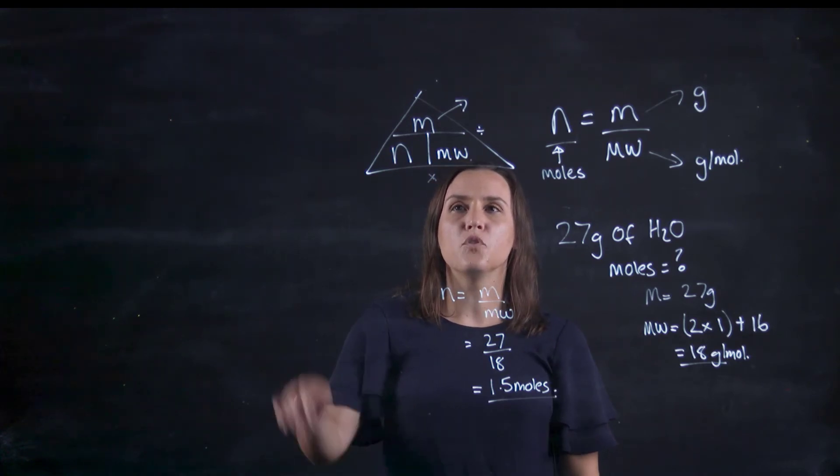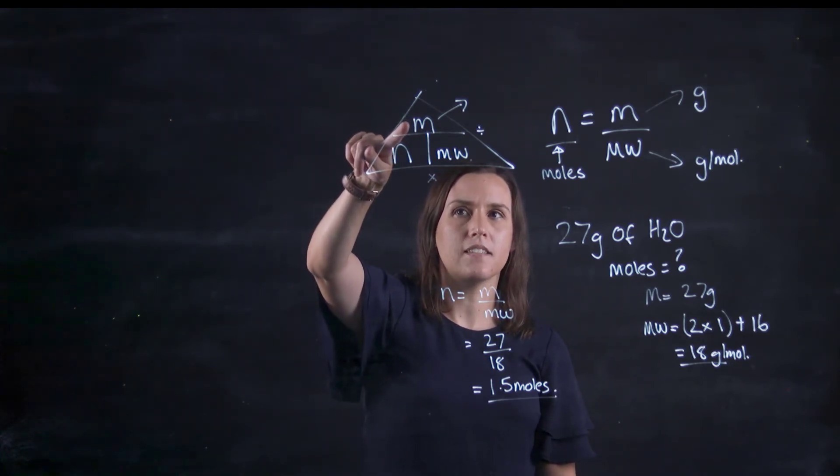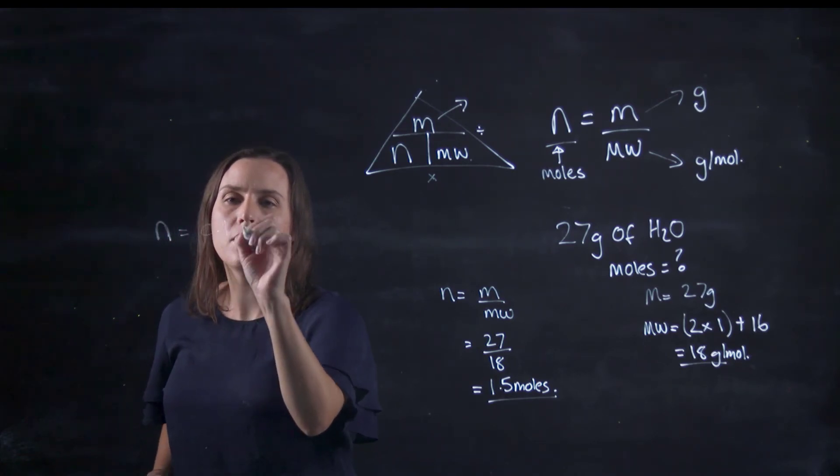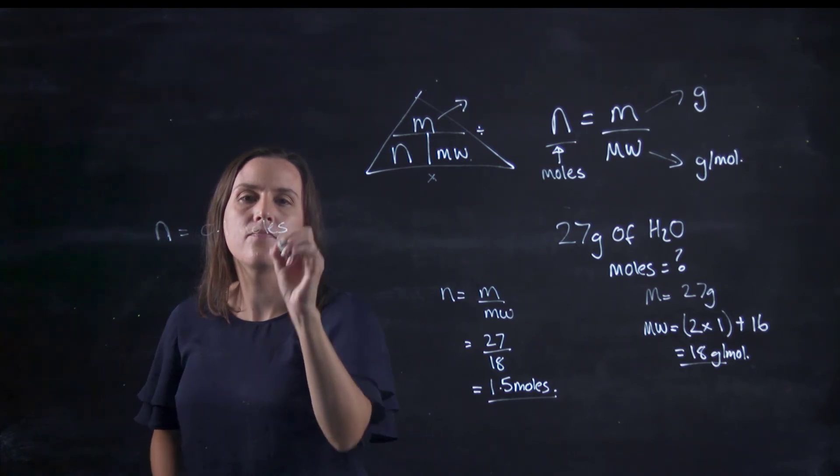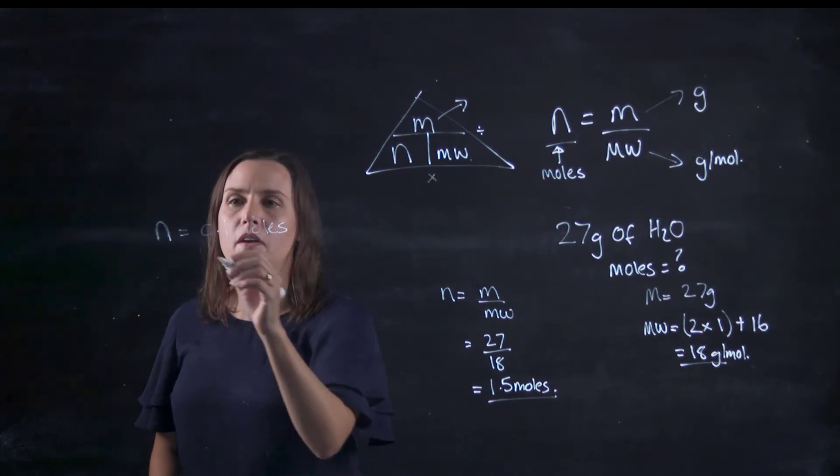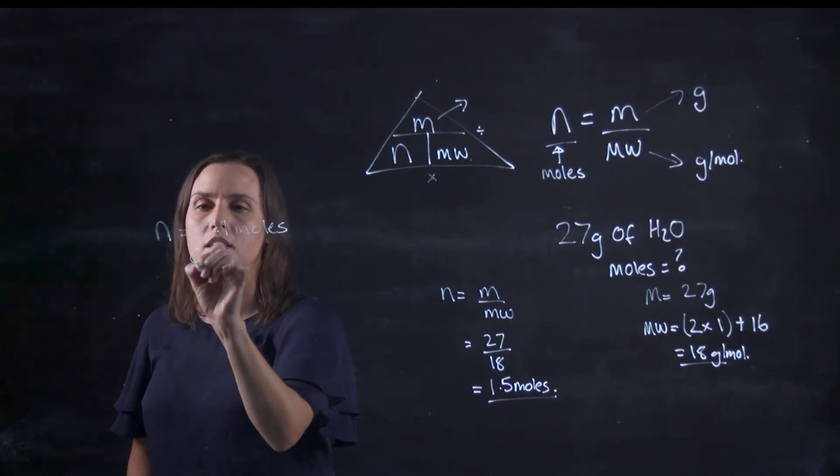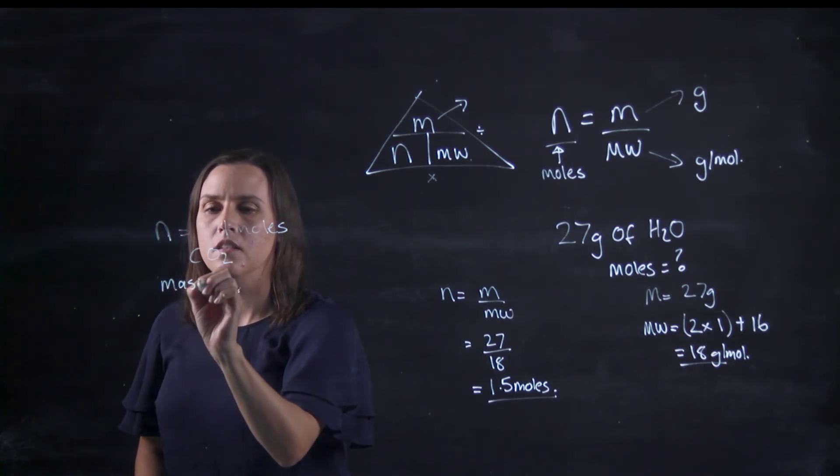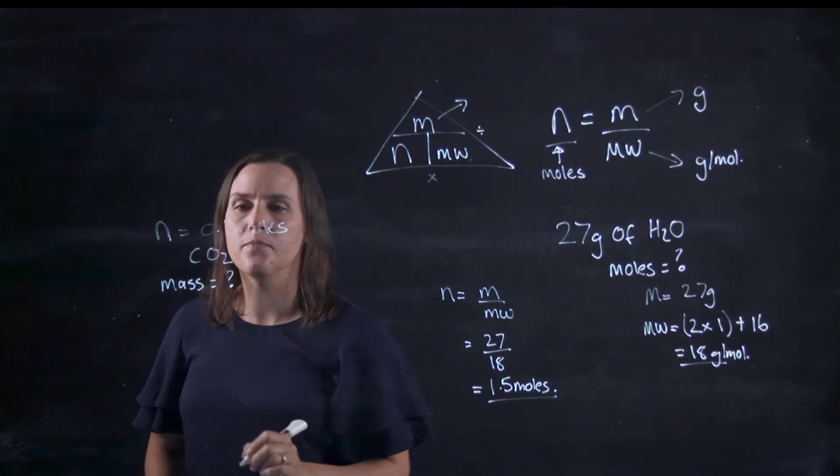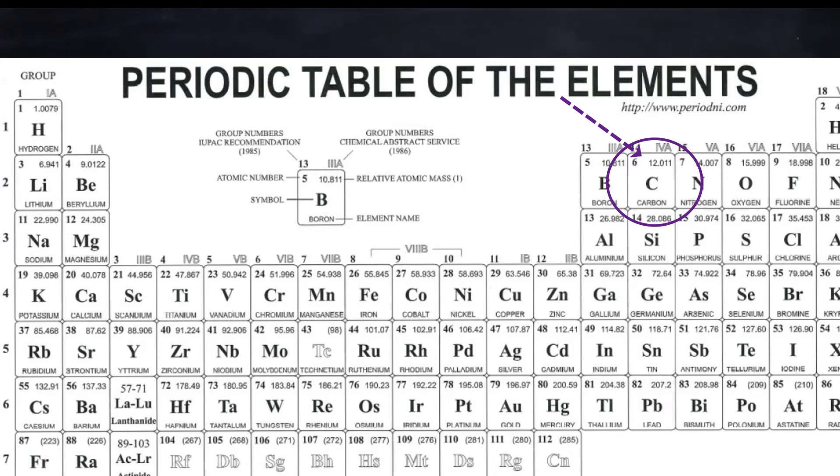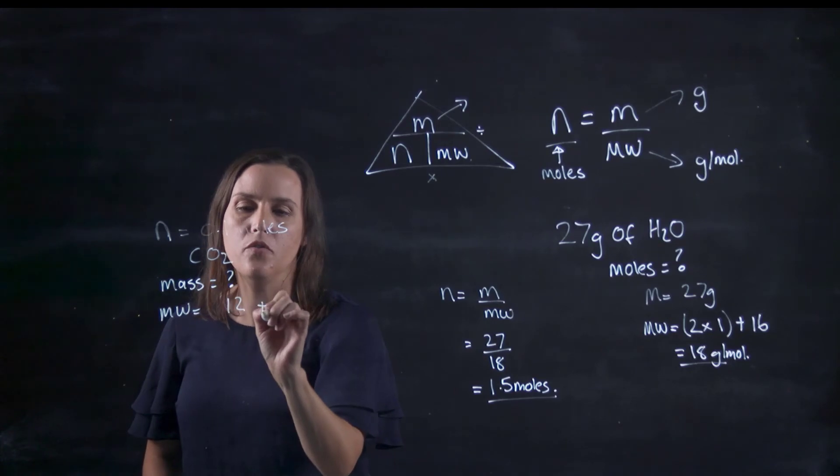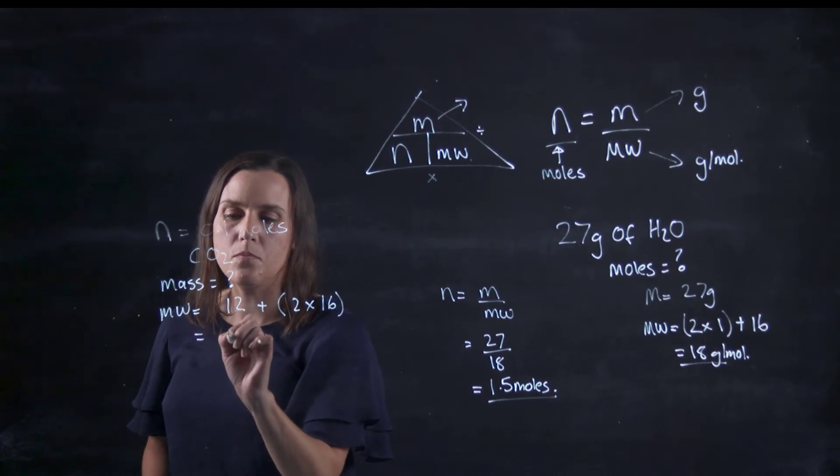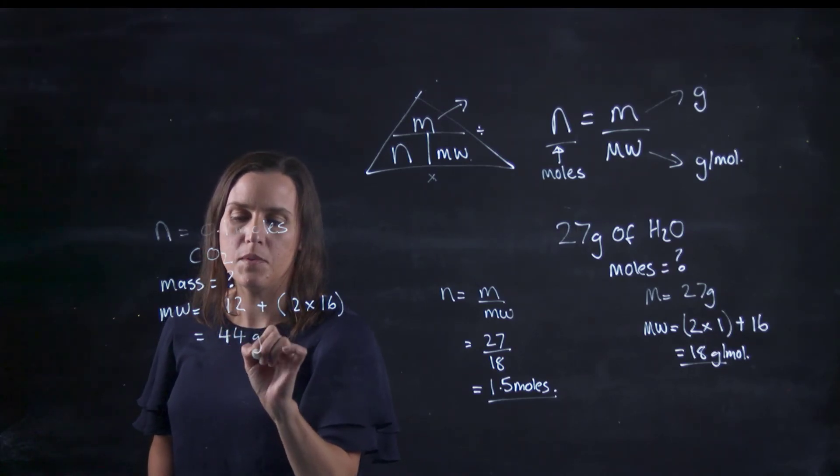Let's do one now where I'm trying to find out my mass. Let's say my moles is 0.1 moles and my molecular weight, so my formula for this one can be CO2, and I want to know what is the mass. I can work out my molecular weight, so carbon is 12 and I've got 2 times 16 for the oxygens, so 32 and 12 gives me 44 grams per mole.